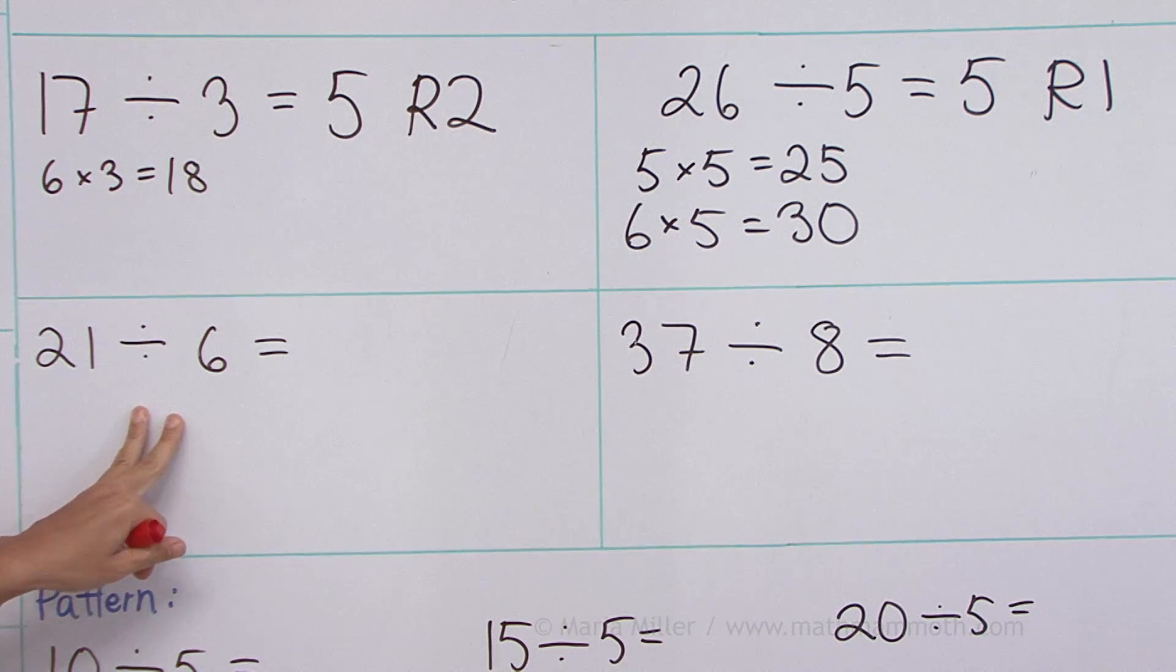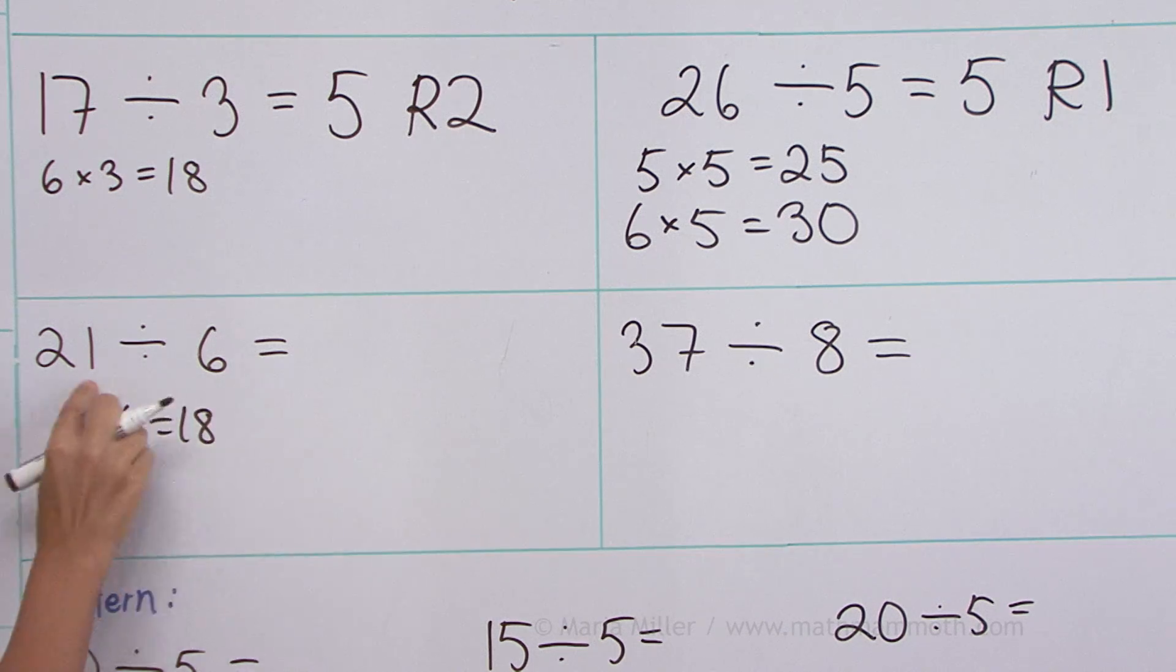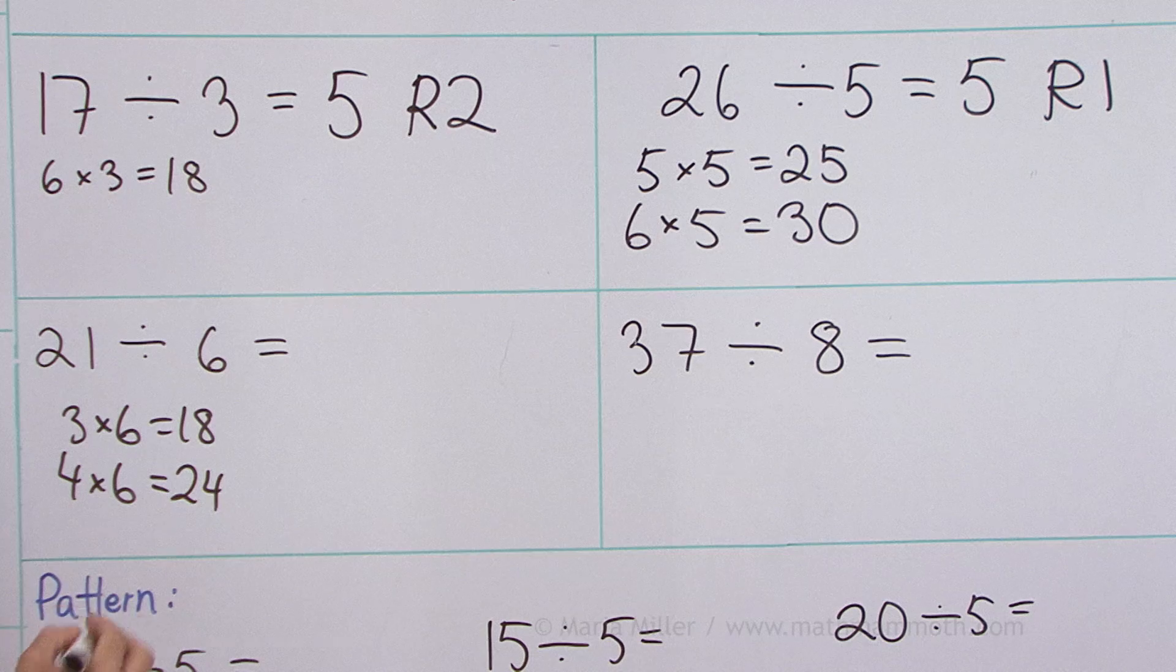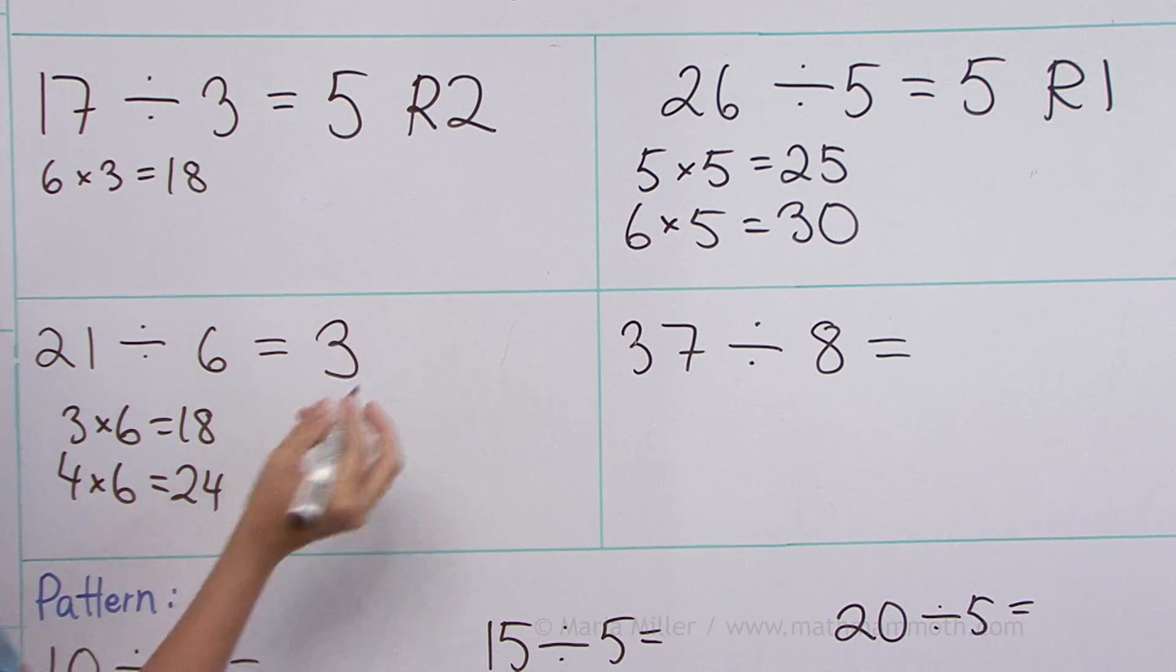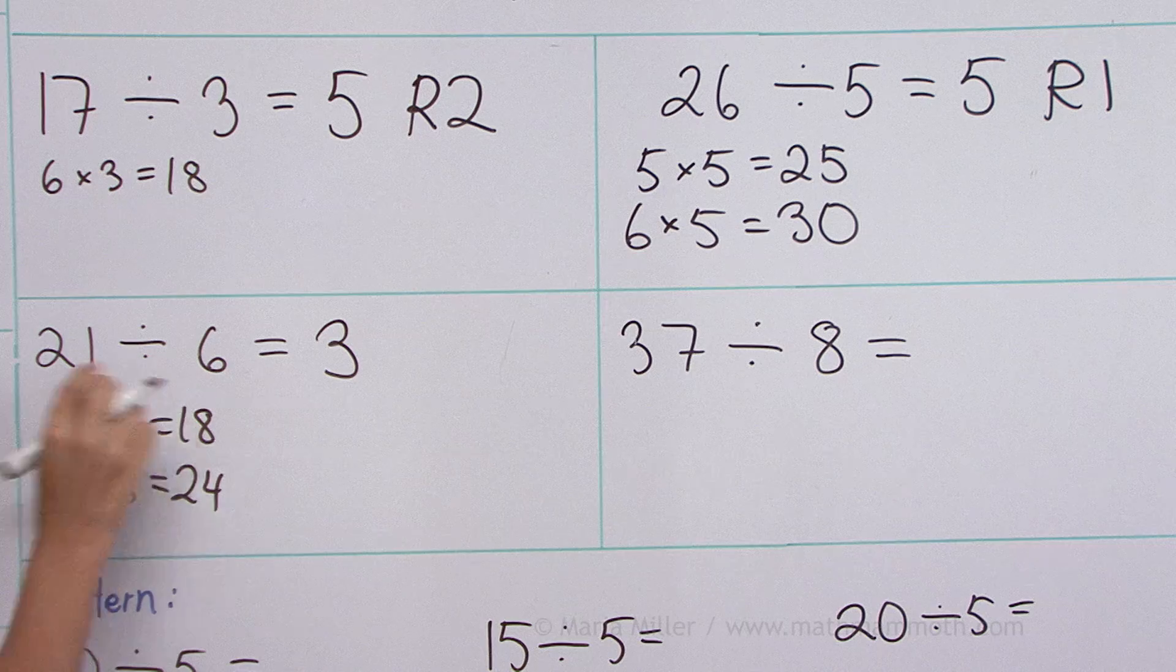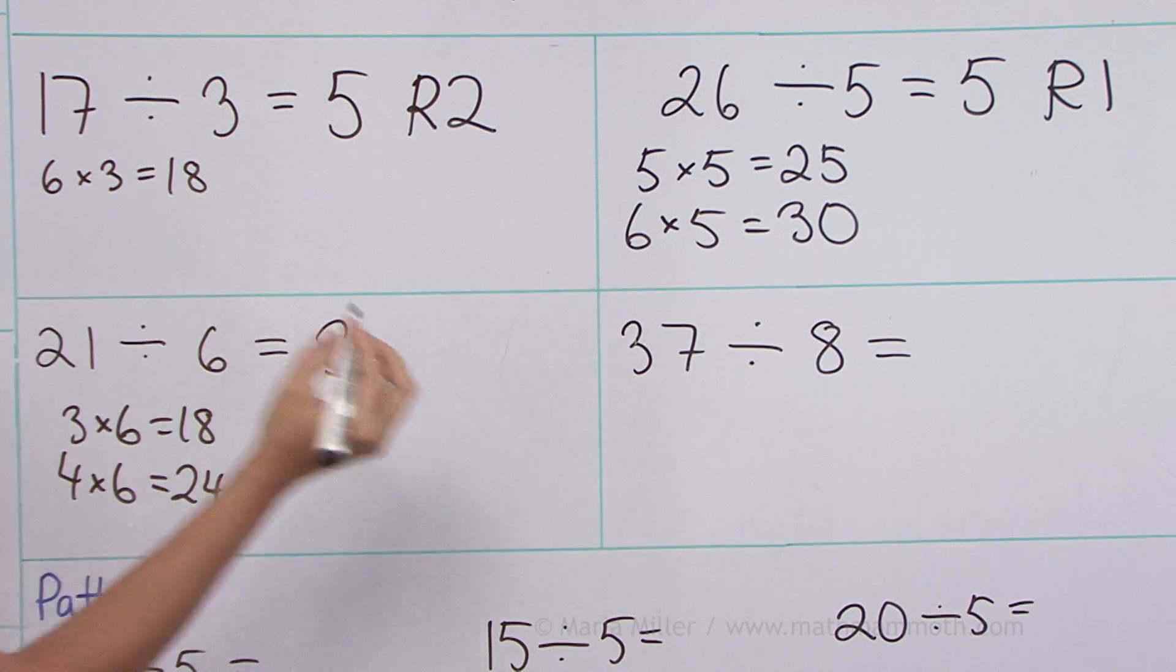Twenty-one divided by six. How many sixes are there? Three sixes would be eighteen. So yes, there are three sixes. Four sixes would make twenty-four. That went over, so the answer is three. Three sixes in twenty-one. And then the difference of eighteen and twenty-one is three.